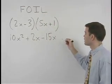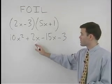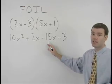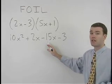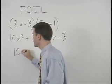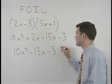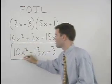positive 1 which is negative 3. Notice that positive 2x minus 15x simplifies to negative 13x so we have 10x squared minus 13x minus 3 as our final answer.